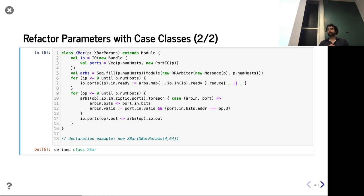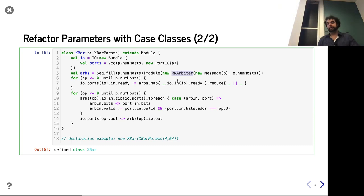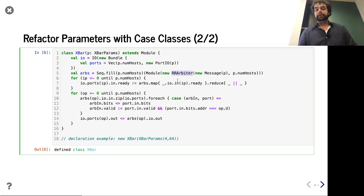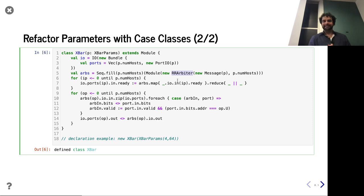Questions, comments so far? Why did I choose to use the round robin arbiter? That was an arbitrary choice to make it a little bit more fair. If it's not round robin, it's fixed priority, so we can have starvation — someone could always win with fixed priority. So the round robin is a little bit more fair. Good question.